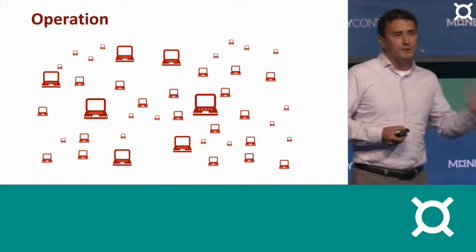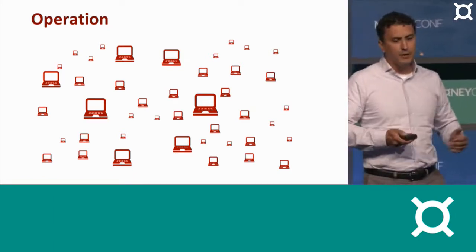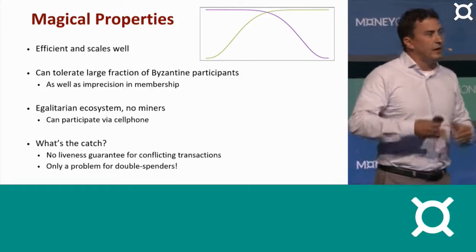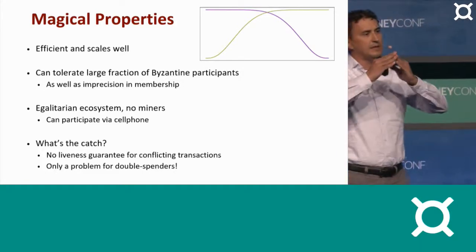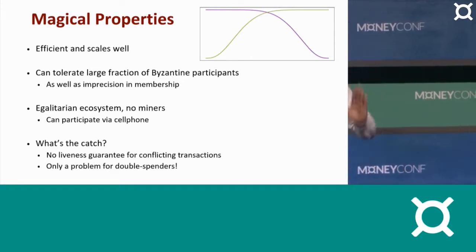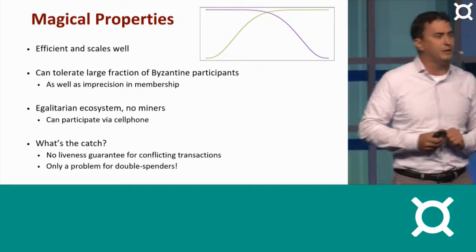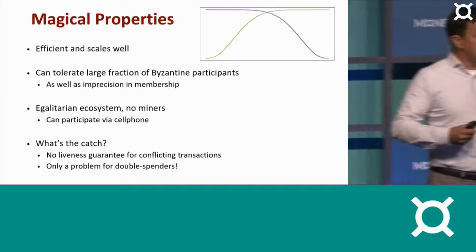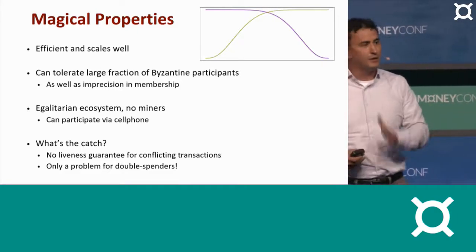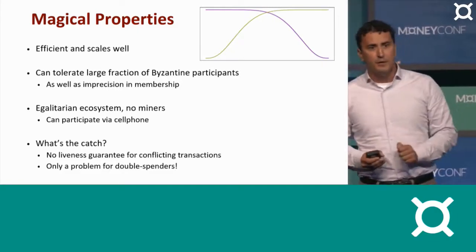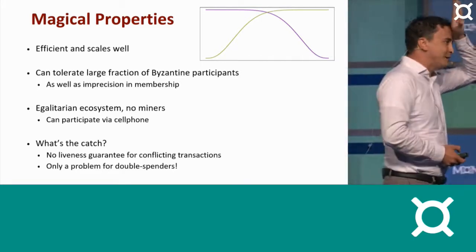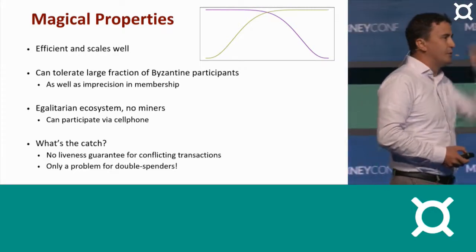And after a 51-49 split, we're going to find ourselves in a bigger split, 53-47, and so on and so forth. This thing is designed to tip — it's not going to stay in the middle. And as it tips, as more and more people shift to one color or the other, we're going to have first a phase change. So the speed with which we move towards one direction is going to increase and increase. And at some point, we're going to reach the point of no return where the entire stadium either has red cards on top of their foreheads or blue cards.